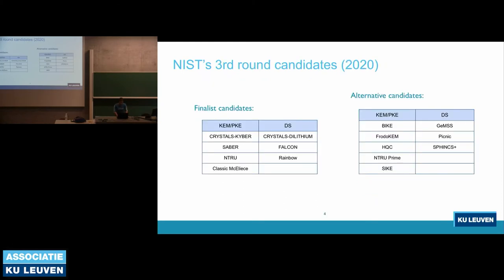Now I'll briefly go through the third-round candidates. The finalist candidates are Crystal Kyber, Saber, NTRU, and McEliece. Among those, three schemes are lattice-based. There are also three finalist digital signature schemes, five alternative KEM or PKE candidates, and three digital signature candidates. Those are the third-round candidates.